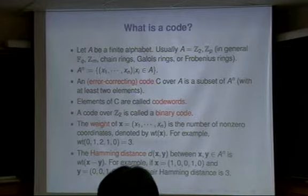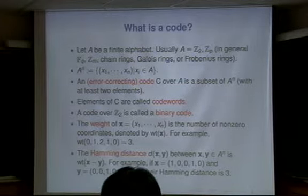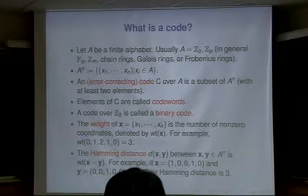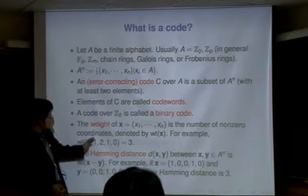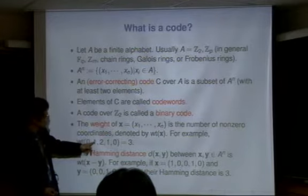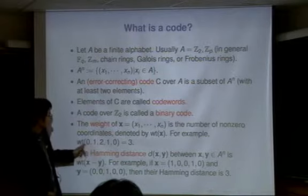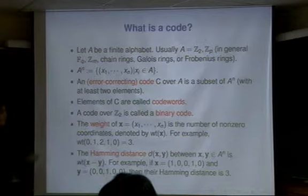You can easily define codewords, binary code, and weight. The weight of a vector in general is the number of non-zero coordinates. In the Hamming weight case, you just regard anything non-zero as weight 1. But in more advanced coding theory, if everything is in Z_4, the Lee weight concept tells that 1 is weight 1, but 2 is considered weight 2. The Hamming distance between two vectors is the weight of X minus Y.